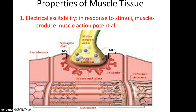Some properties of muscle tissue. One important property is electrical excitability, which means that in response to a stimulus, the muscle will produce what's called a muscle action potential, which is basically a slight charge differential that will flow along the plasma membrane of the muscle cell.